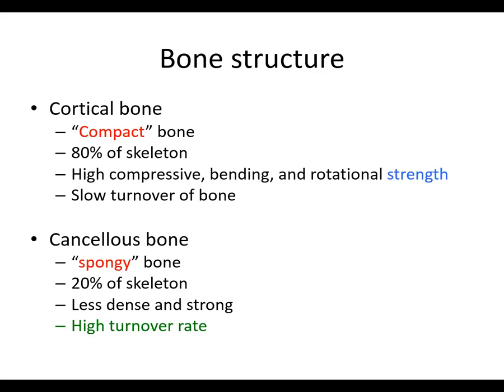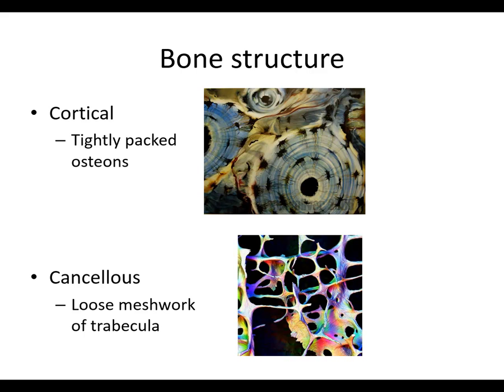Cortical bone is compact bone, making up 80% of the skeleton. It has high compressive, bending, and rotational strength and a slow turnover rate. Cancellous bone is spongy bone, comprising 20% of the skeleton — less dense and strong, but with a high turnover rate. So a diaphyseal fracture in cortical bone will be slower to heal, while cancellous bone is more susceptible to fracture but heals faster. Histologically, cortical bone has tightly packed osteons versus cancellous bone, which is a loose meshwork of trabeculae.